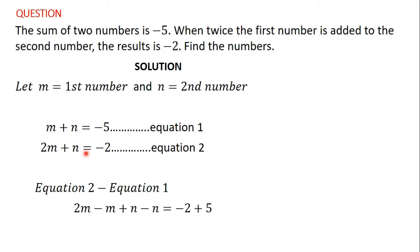I'll take the first term in equation 2, which is 2m, minus the first term in equation 1, which is m. Then the second term in equation 2, which is n, minus the second term in equation 1, which is n, is equal to the right-hand side of equation 2, which is negative 2, minus the right-hand side of equation 1, which is negative 5. So it's negative 2 minus negative 5, and that is going to give us positive 5.